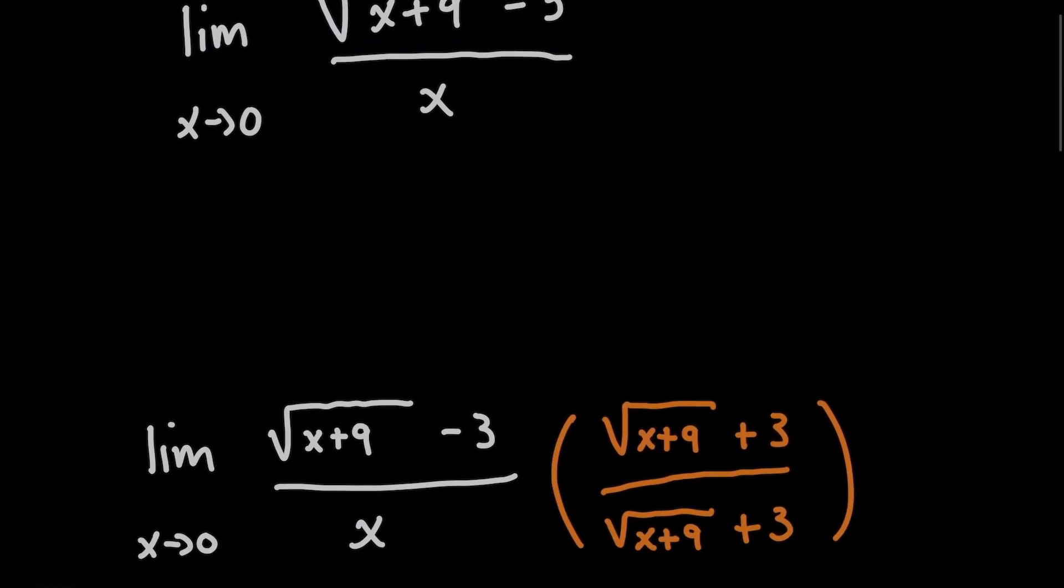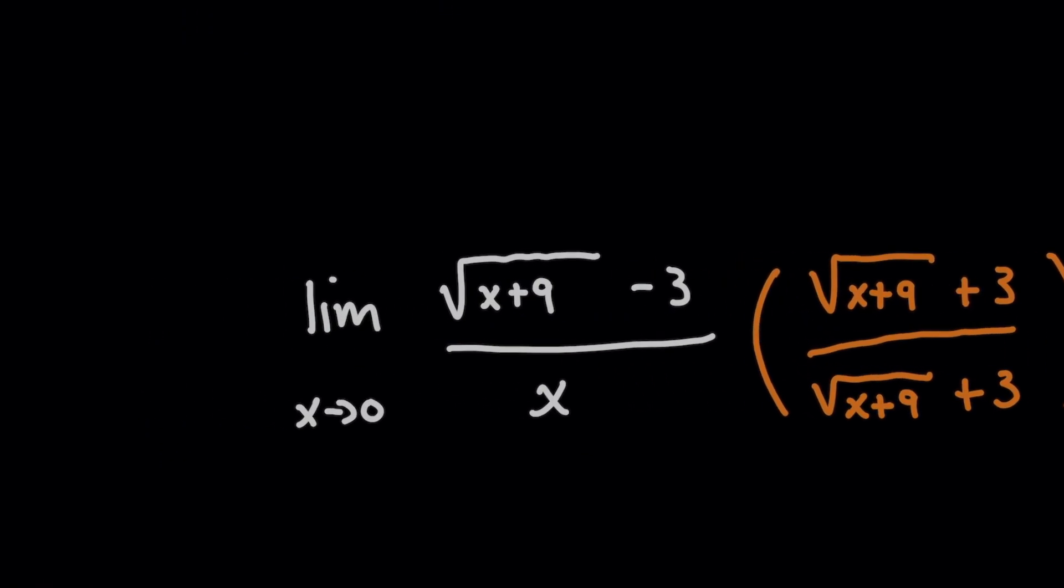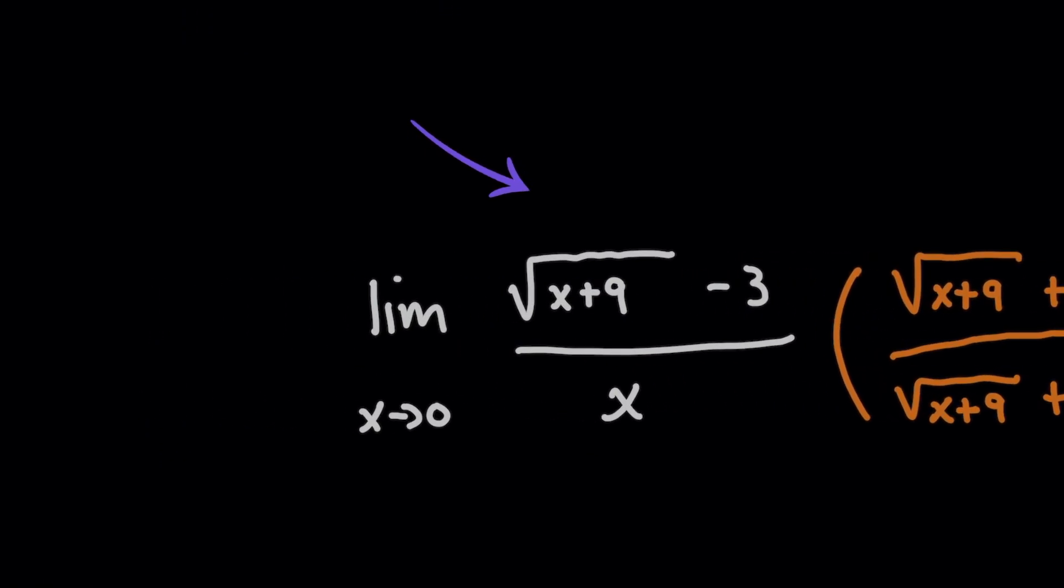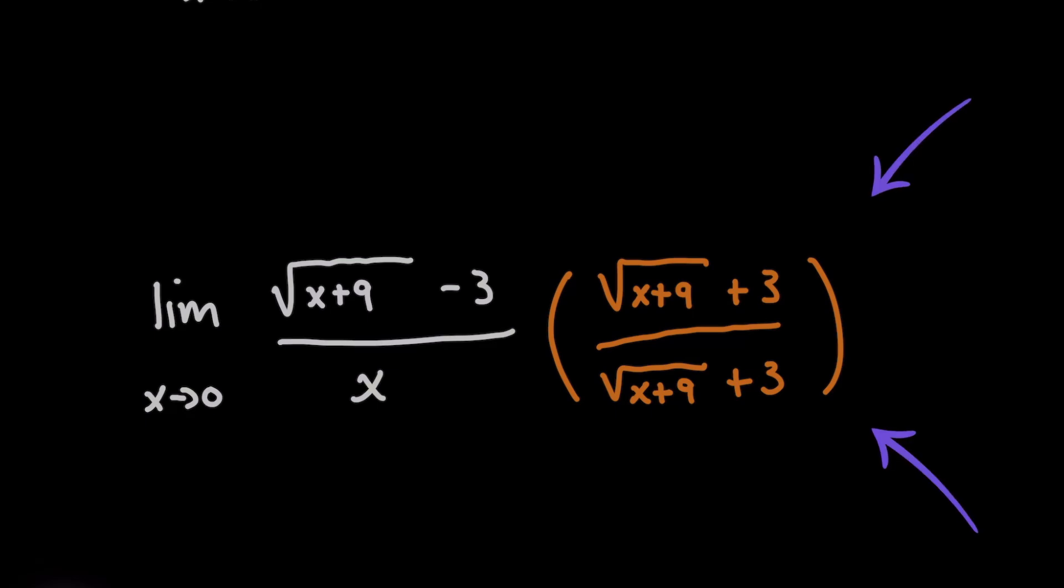So here's how you get the conjugate. What you do is you take the top, this square root expression, and the original constant three. But whatever the operation in between was, whether it's a minus or plus, take the opposite of that. And for that result, you multiply the top and the bottom by the conjugate.